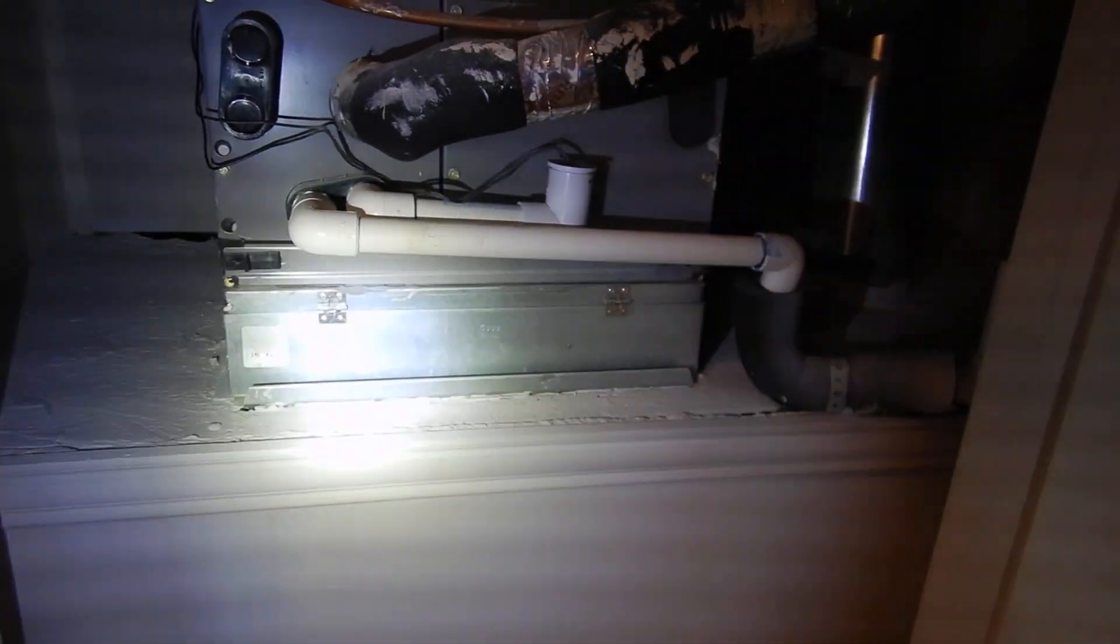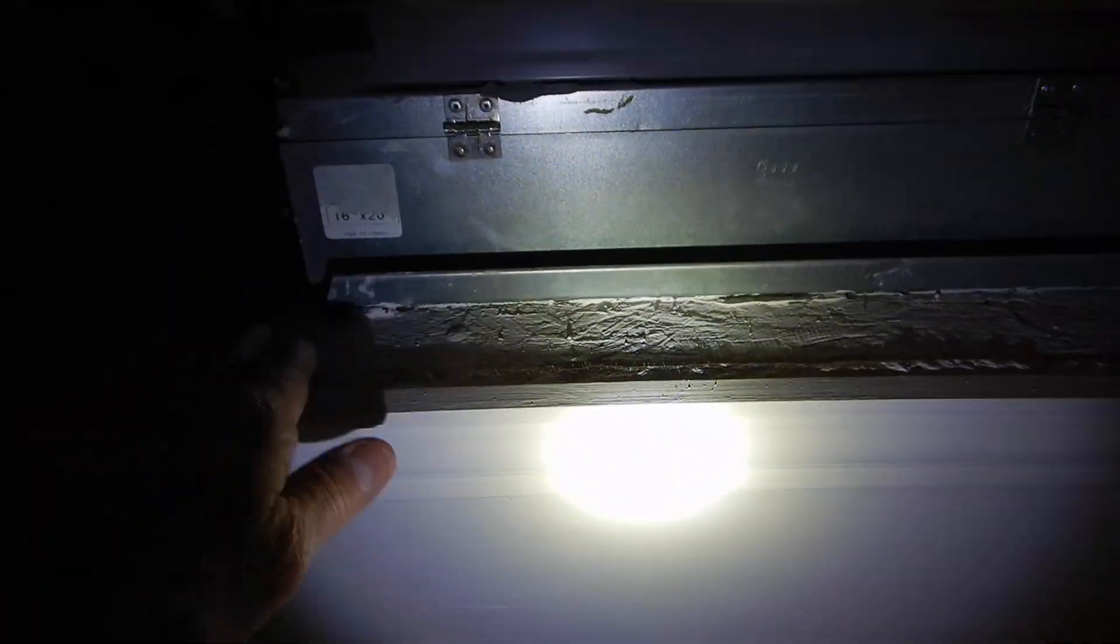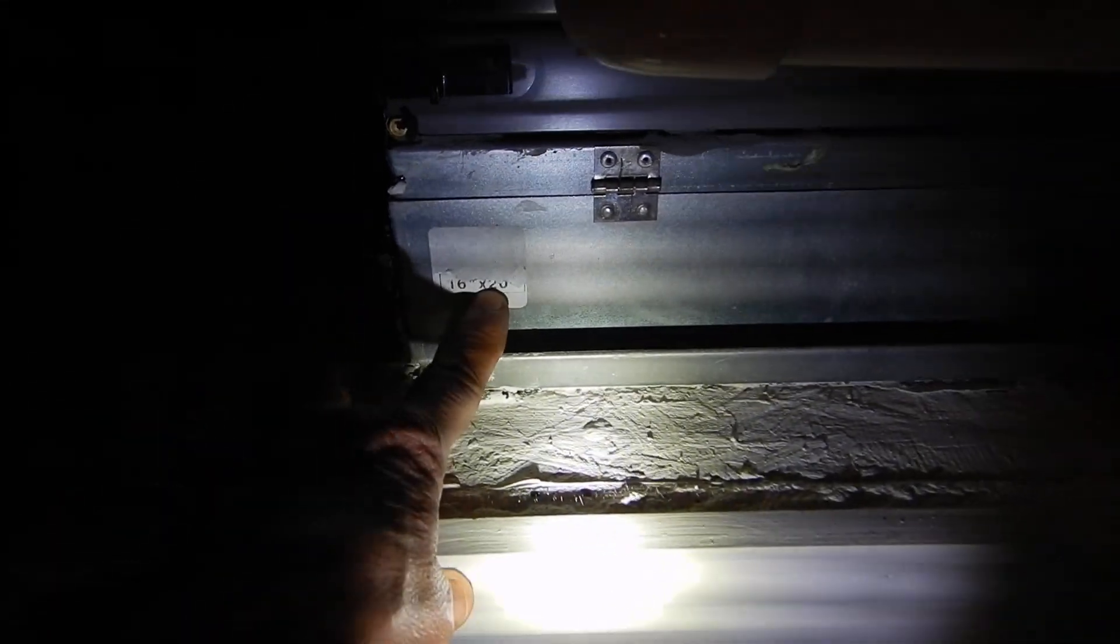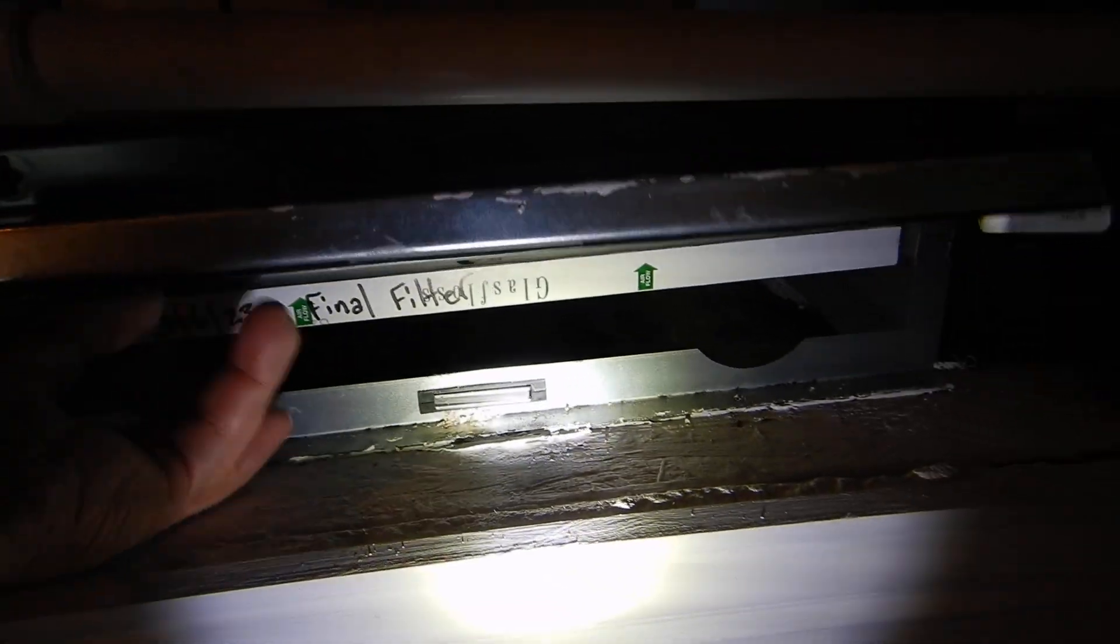And this is the air filter. The air filter's at the unit, right here. These one-inch air filters should be changed every month. It's a 16x20. And there's our air filter, right there. It should be cleaned once a month. Where's our air return? That's our air return, right there.